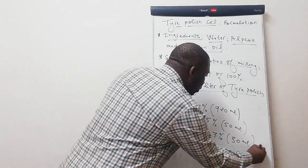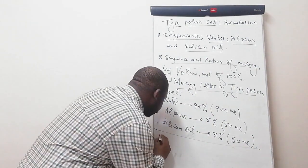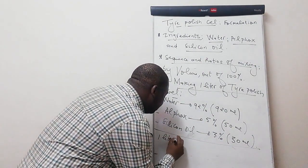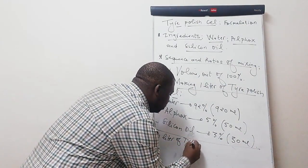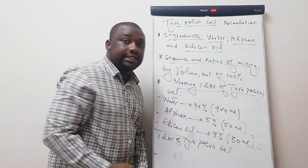By doing this, you obtain one liter of your tire polish gel.